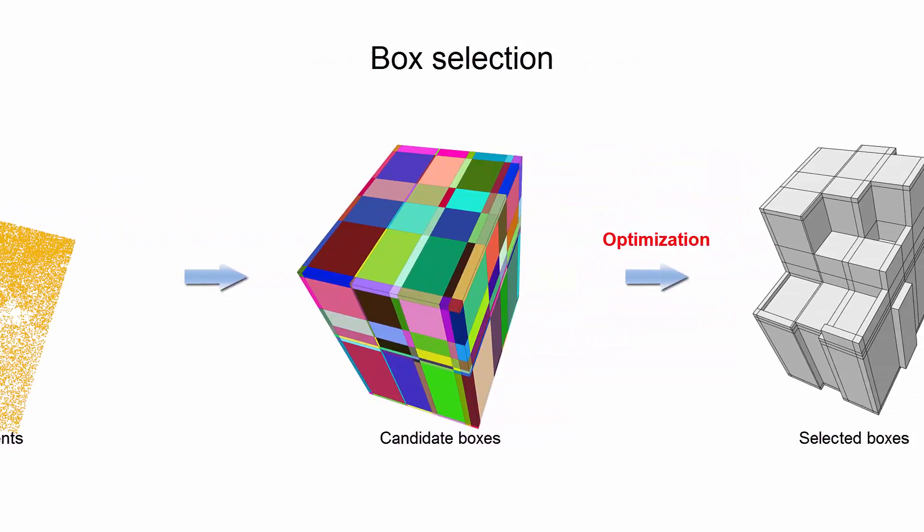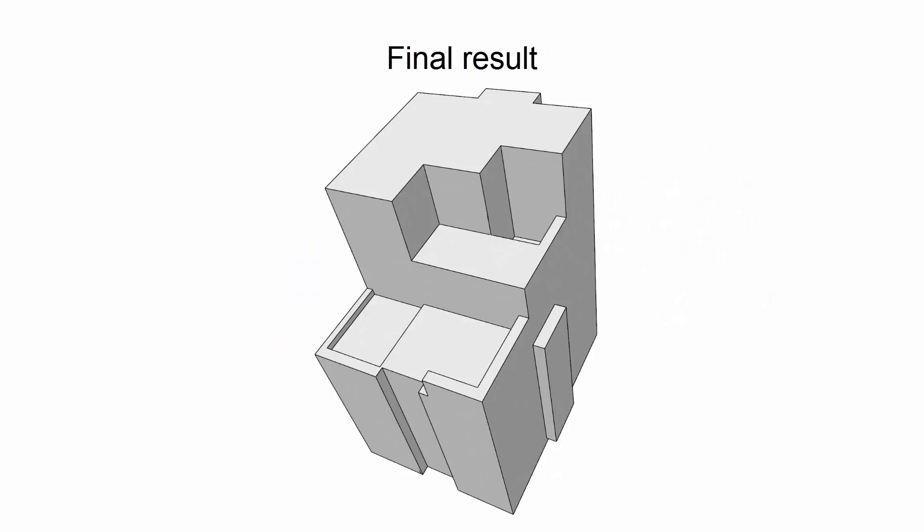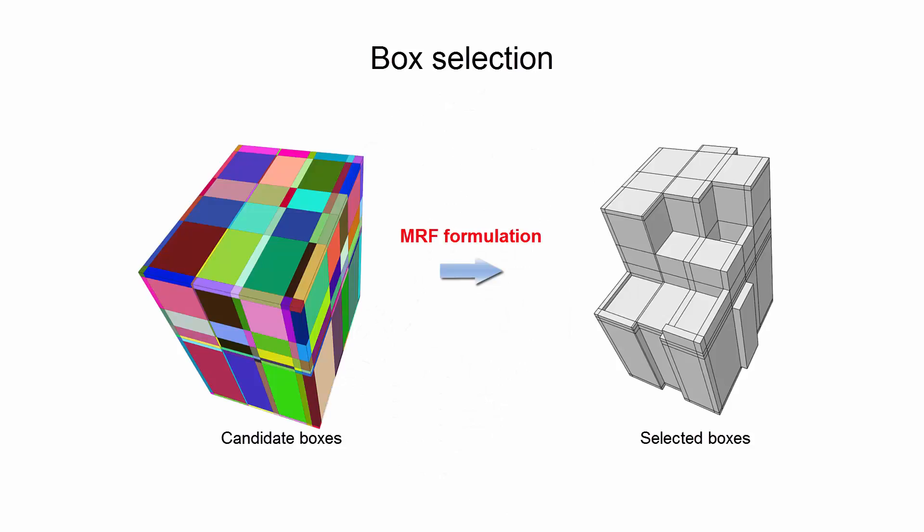We formulate an optimization problem to select a set of these boxes to represent the geometry of the building. The optimization is based on a Markov random field formulation.